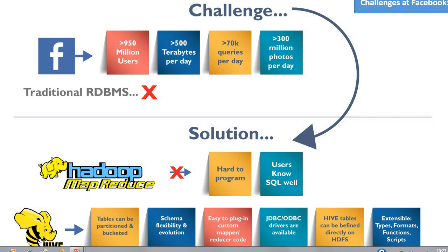As data grew at Facebook, the complexity of MapReduce code grew proportionally. Training people with a non-programming background to write MapReduce programs became very difficult. For performing simple analysis, one had to write hundreds of lines of MapReduce code. Since SQL was widely used by engineers and analysts at Facebook, putting SQL on top of Hadoop seemed a logical way to make Hadoop accessible to users with SQL background.